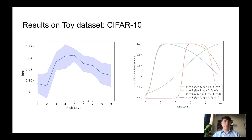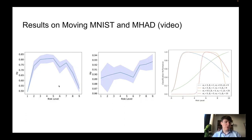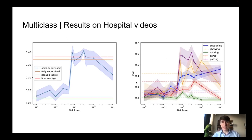If you do those experiments on, for example, Cypher, you see that you have a bell-shaped curve where the optimal performance is for like middle time of event estimate and risk level. You have similar results on moving MNIST and it's a bit different on MHID, which I'm going to quickly explain now using these examples on hospital videos.